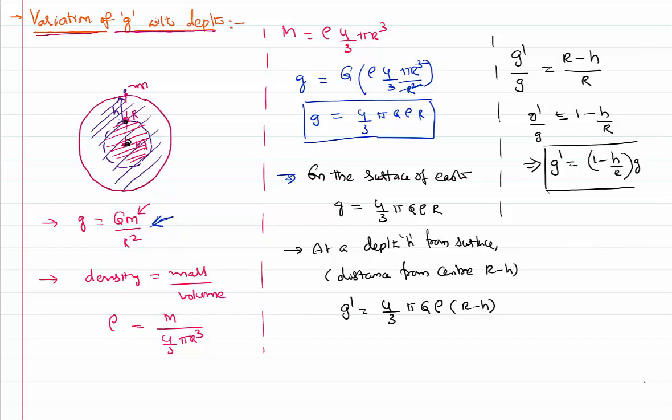This is how the acceleration due to gravity is supposed to vary with respect to the depth. If you have noticed, with respect to the height, that is 1 minus 2h by r. That means the value of g falls more quickly when you go above the earth than when you go into the earth. It is little slow, how it decreases when we are going into the earth when compared with the way that you are going above the earth.